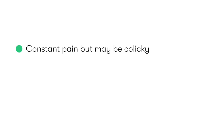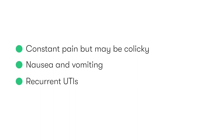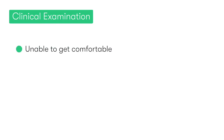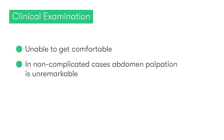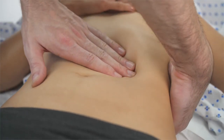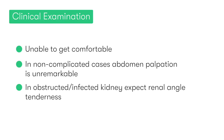The pain the patient describes is usually constant; however, it can also be colicky in nature. As well as pain, it's common for patients with urinary tract calculi to experience nausea and vomiting, and in some cases they may also describe symptoms consistent with recurrent urinary tract infections. When we examine these patients, they are typically unable to get comfortable regardless of whatever position they adopt. In non-complicated cases, palpation of the abdomen is usually unremarkable. However, in cases where the kidney is obstructed and infected, we may expect to elicit some tenderness over the renal angle. If the patient has a UTI as well as a stone, they may also demonstrate features of sepsis.